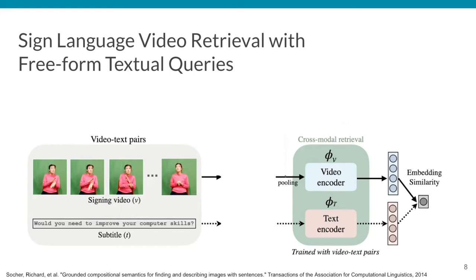To learn the encoders, we adopt the cross-modal ranking learning objective proposed by Soher et al, referred in the bottom of this slide. The inference is done by computing the cosine similarity between the text query and every indexed signing video to produce the ranking, and vice versa when applied to the video-to-text task.